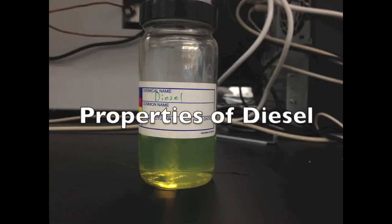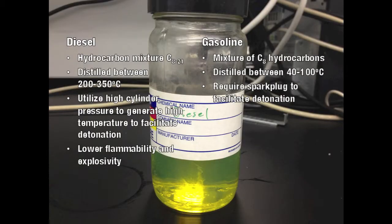Now let's discuss what makes diesel different from gasoline. First, the mixture of hydrocarbons is different. While diesel contains a mixture of hydrocarbons ranging from 8 to 21 carbons long, gasoline is a mixture of largely 8 carbon chains. Due to its longer carbon chains, diesel has a lower flammability and explosivity when compared to gasoline.